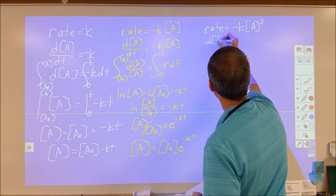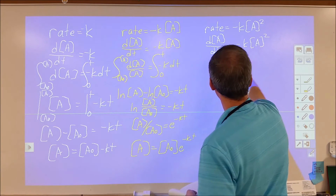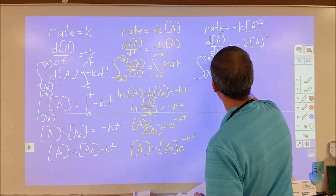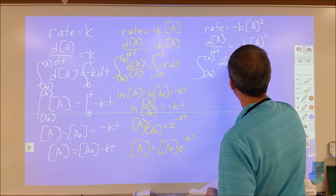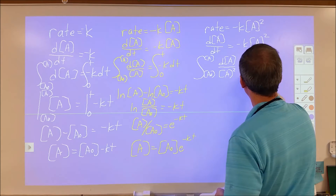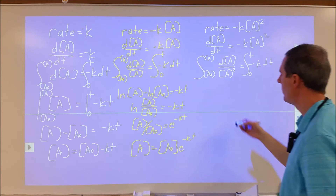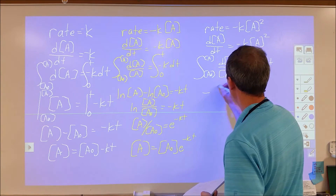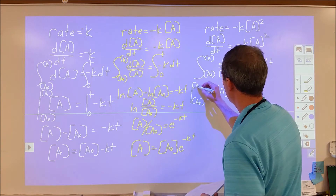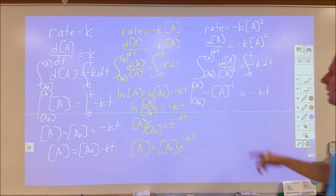So again, we have dA/dt is equal to negative K times A squared. We're going to pull the A squared over to one side, dt over to the other, and then integrate. Integrating dA over A squared — or A to the minus 2 — from A₀ to A, equals negative K dt integrated from 0 to T. The integration of A to the minus 2 gives negative A to the minus 1, evaluated from A₀ to A, which equals negative Kt.